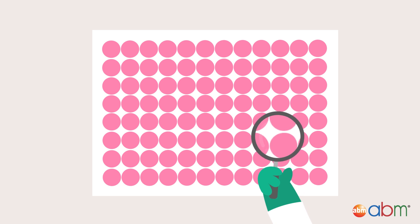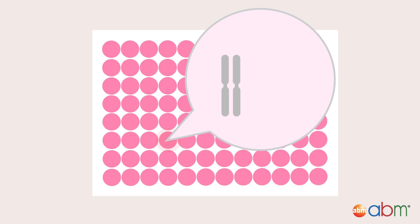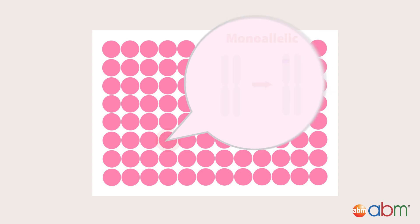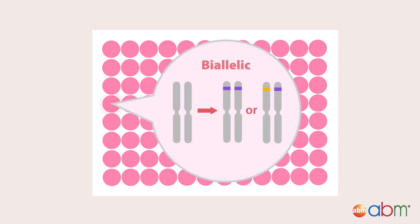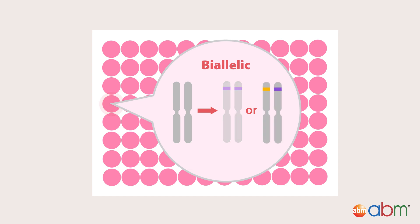Finding this clone will require some detective work. Following your CRISPR experiment, some clones will have indels on only one allele, otherwise known as monoallelic, while others will have indels on both alleles, otherwise known as either homozygous or heterozygous biallelic, depending on the edit type. Having identical edits on both alleles is known as homozygous biallelic editing; if the edits are different, it is known as heterozygous biallelic editing.